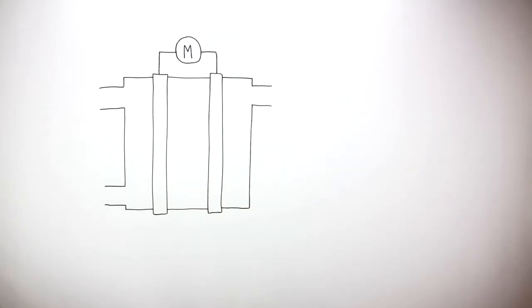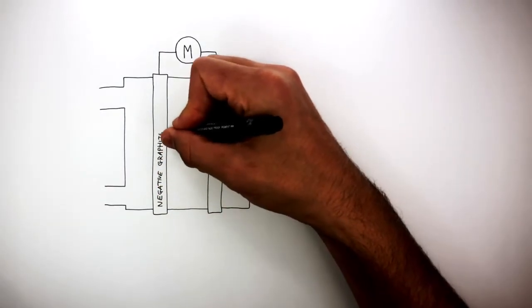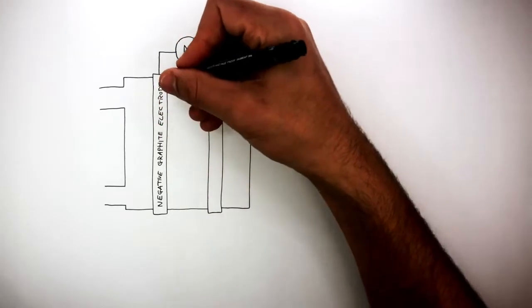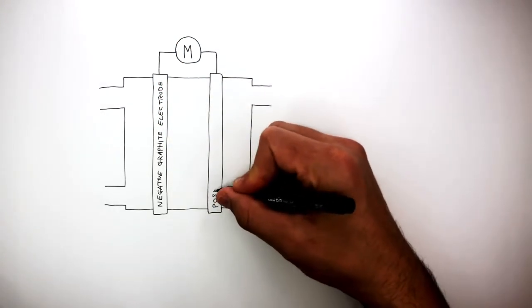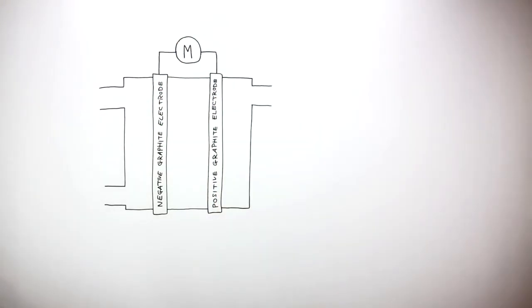You need to know: this is the negative graphite electrode and this is the positive graphite electrode. Both electrodes are made out of graphite, as graphite is able to conduct electricity.